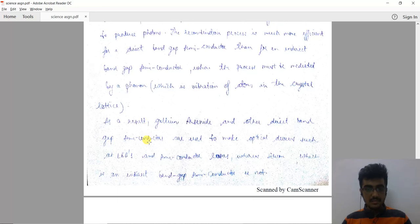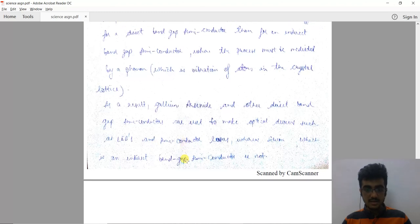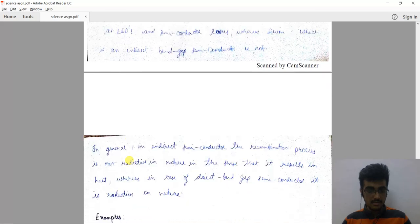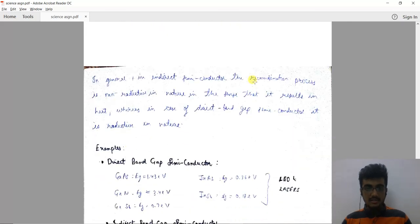As a result, gallium arsenide and other direct band gap semiconductors are used to make optical devices such as LEDs and semiconductor lasers, whereas silicon is an indirect band gap semiconductor. In general, in direct semiconductors...